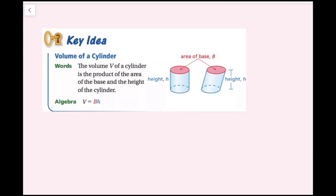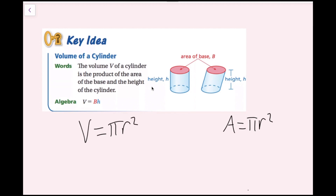The volume V of a cylinder is the product of the area of the base and the height of the cylinder. So V equals the base area B times H. The base area of a cylinder is the area of a circle, and the area of a circle is A equals pi R squared. So if we put this all together, the volume of our cylinder is going to be pi R squared times the height. This is our cylinder formula.